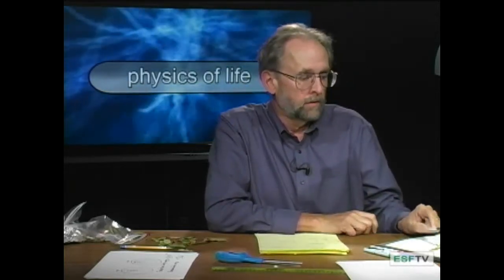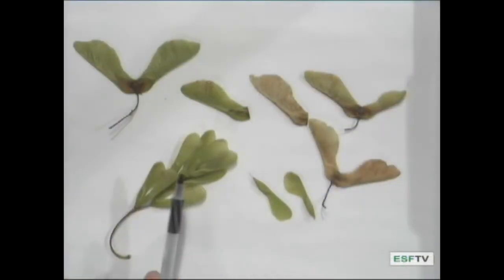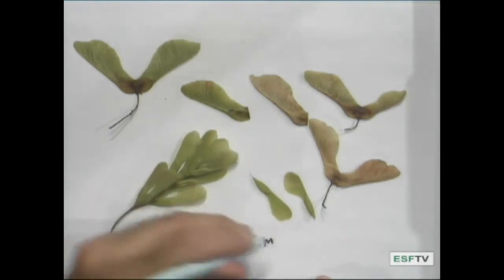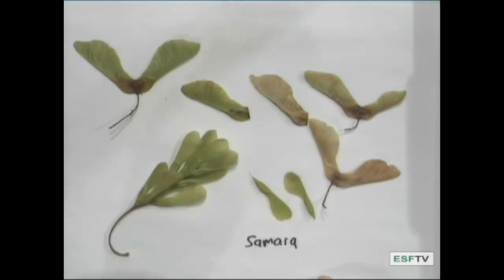The phenomenon I'm referring to involves the seed capsules of the local maple trees. Central New York has a very rich tree flora, and among them are the maples, several species of maples. Every summer they put out seeds, and here are some examples of seeds. These are known generically as a type of seed coat known as a Samara.